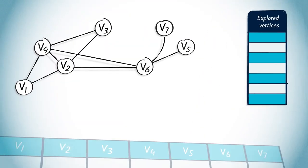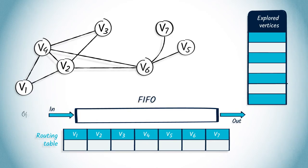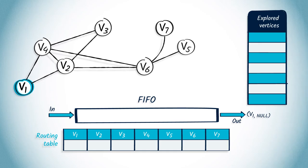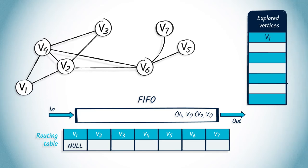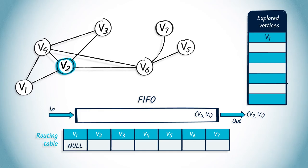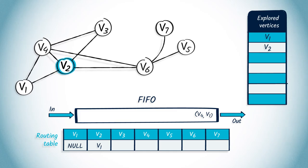Let's now see how we can perform a BFS from V1 by using a FIFO. We start by pushing V1 in the FIFO with null as parent. We pop V1 and null. V1 wasn't previously explored, so we mark it and update the routing table. Then we push all unexplored neighbors of V1 — V2 and V4 — with their parent V1. We pop V2 with V1 as parent, because it's the first element that was pushed. V2 wasn't previously explored, so we add it and update the routing table. We push all neighbors of V2 not in the explored list — V4, V3, and V6 — with V2 as parent.